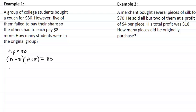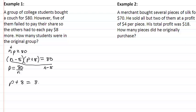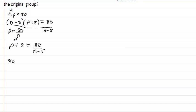We want to know how many students there were, so we want to solve for n. We divide by n so that P equals eighty over n. Then dividing by n minus five gives us P plus eight equals eighty over n minus five. Substituting in for P, we get eighty over n plus eight equals eighty over n minus five.